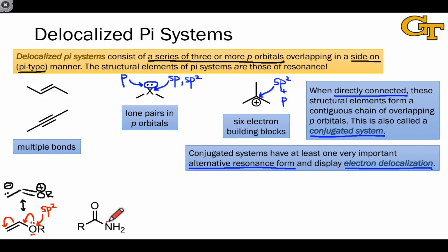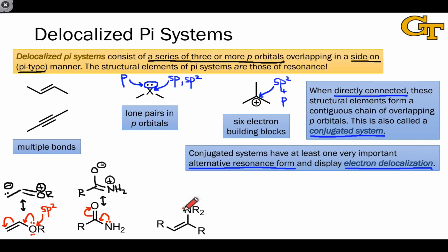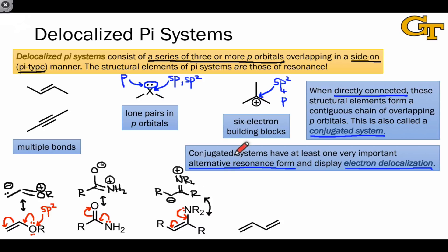The amide functional group is analogous. The lone pair on nitrogen and the pi bond between carbon and oxygen are part of a three-atom delocalized pi system consisting of the nitrogen, carbon, and oxygen. Here's yet another example that shows a lone pair adjacent to a carbon-carbon pi bond, and here the nitrogen and two carbons linked by the double bond form a three-atom pi system.